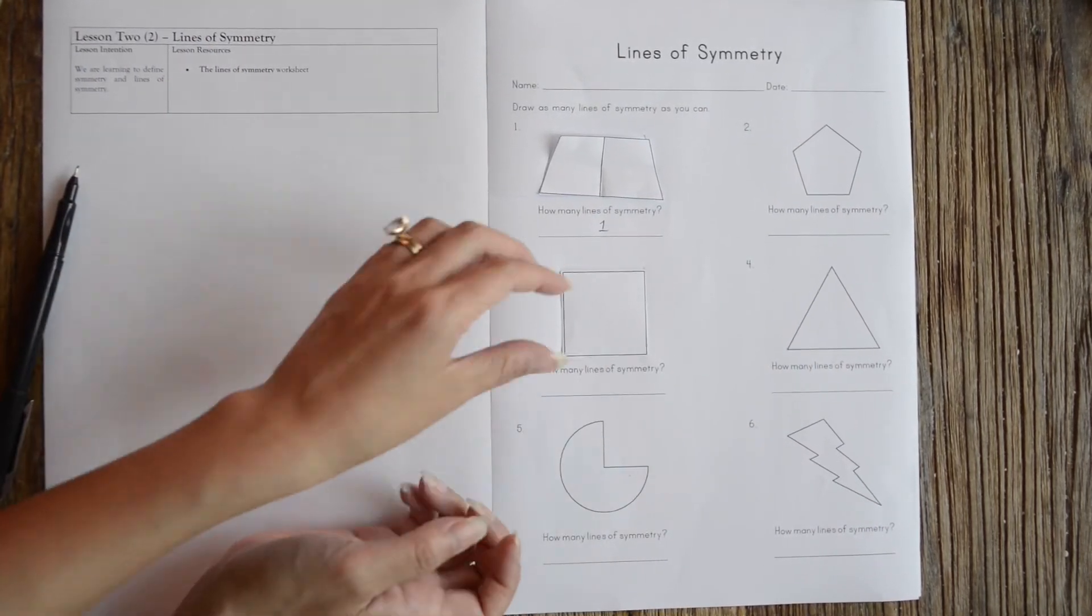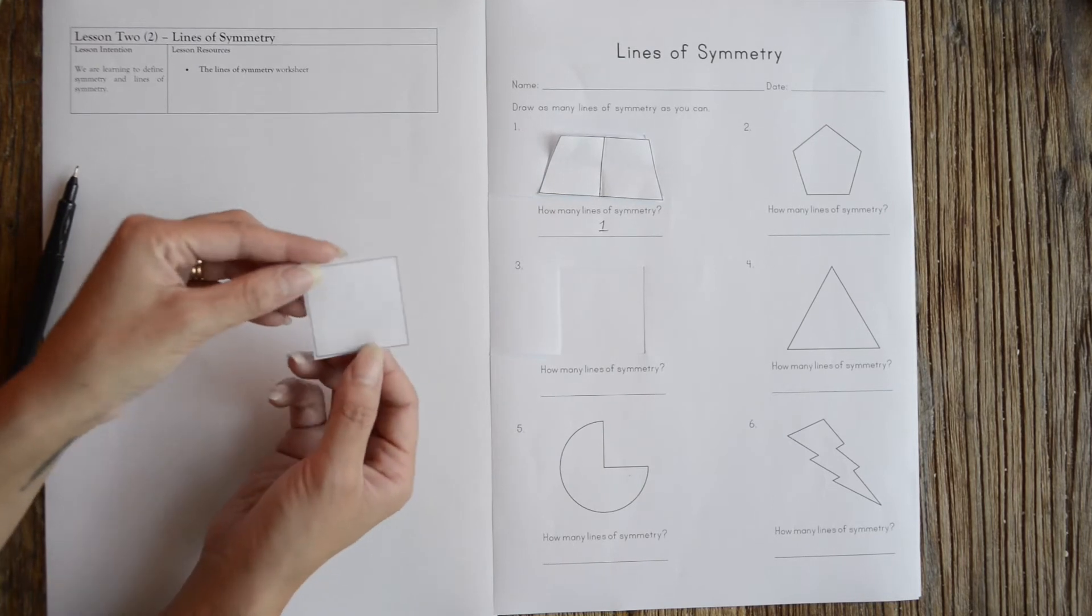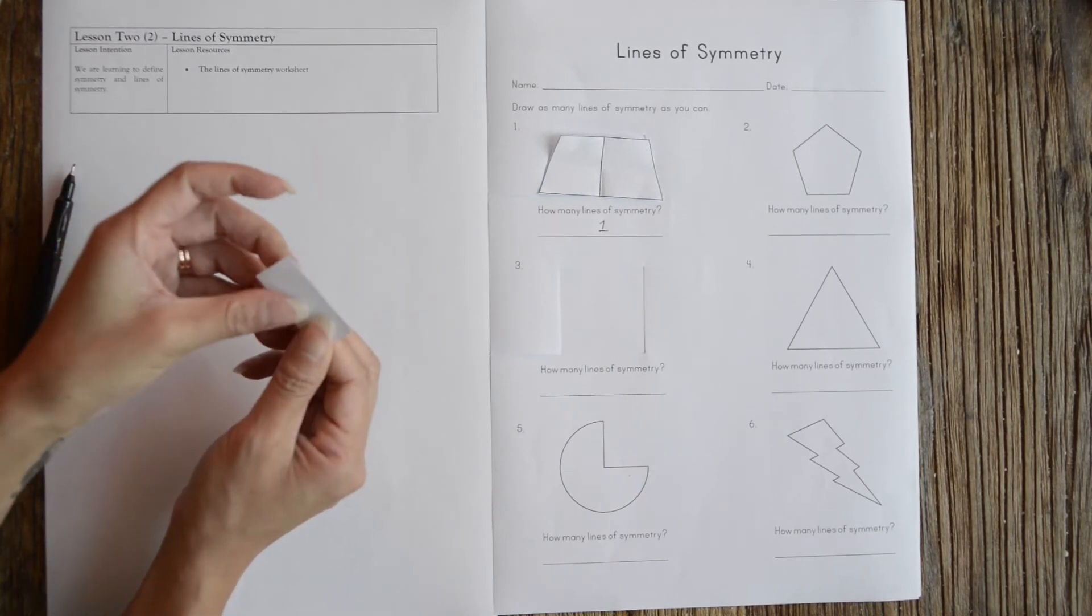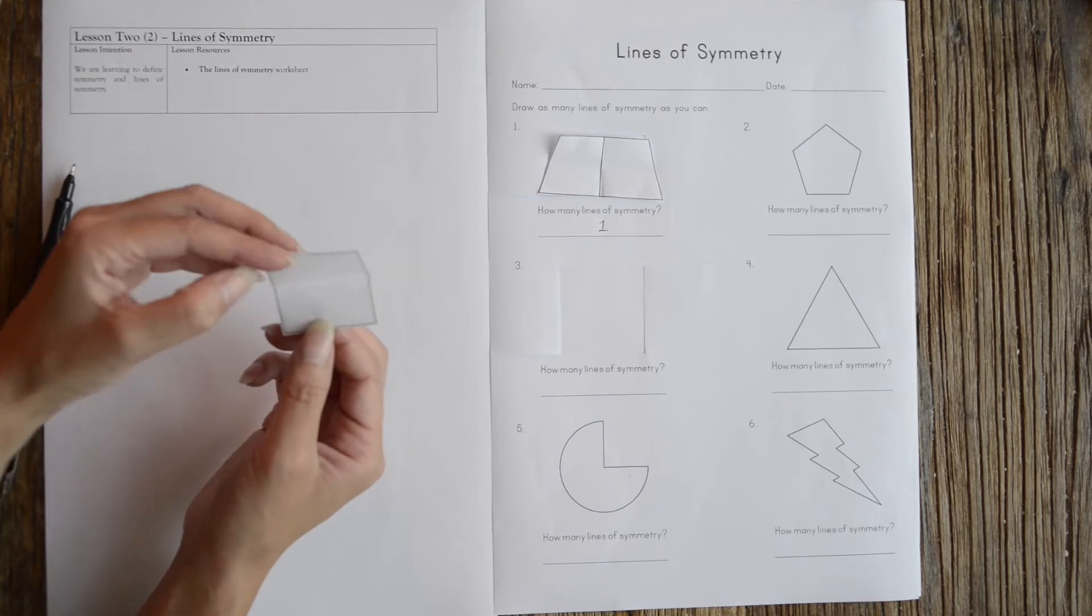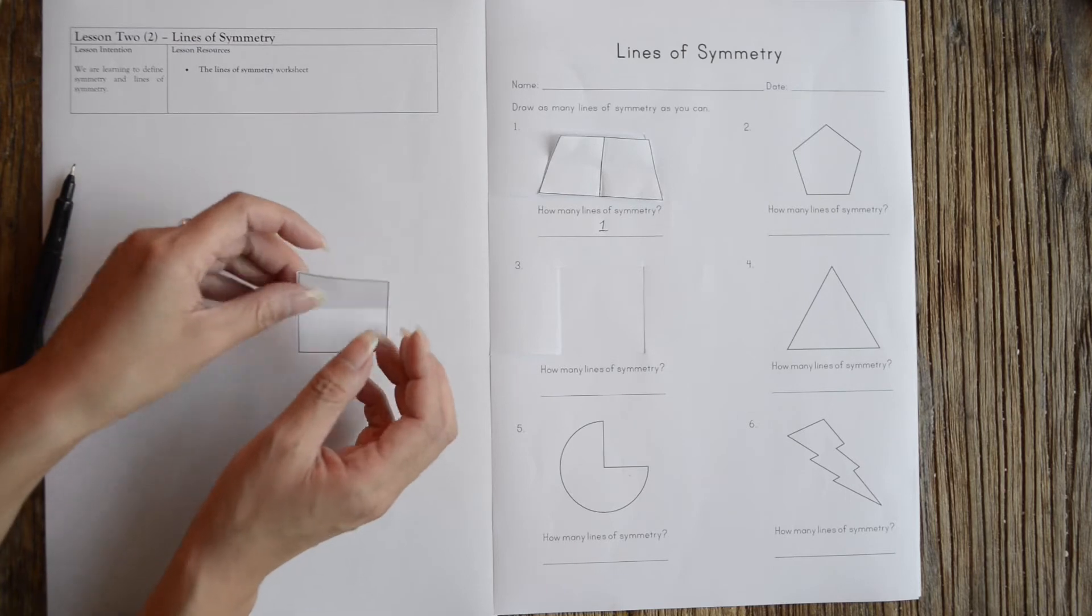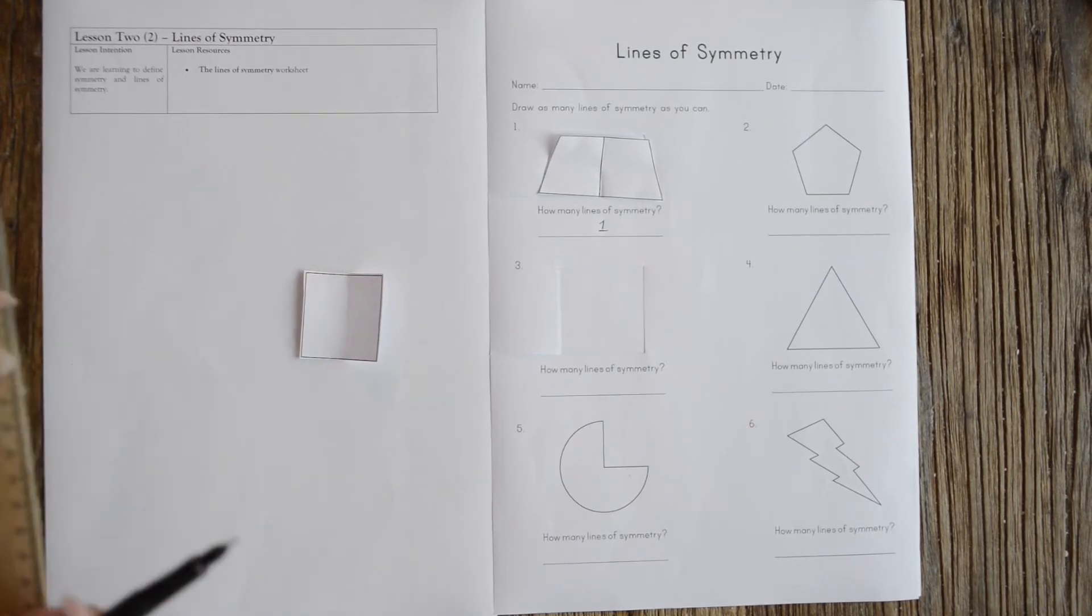Now for the square, it's a little bit different. I can fold it this way and I've got two rectangles that are the mirror image of each other. So that's one line of symmetry. I'm going to draw that line there.